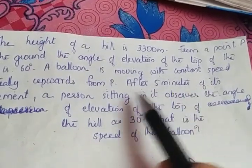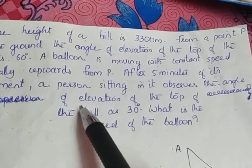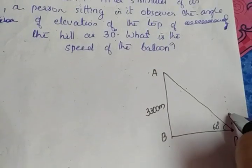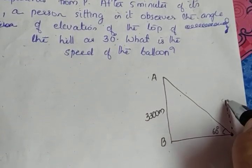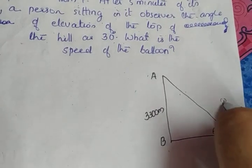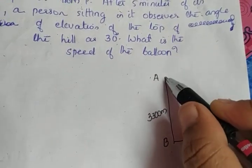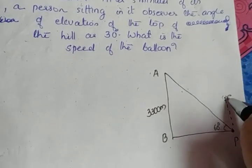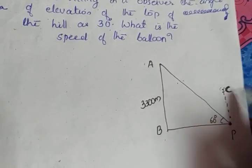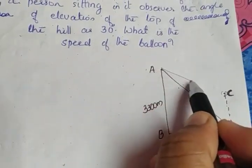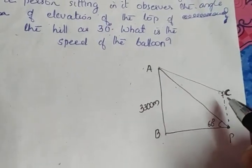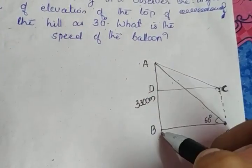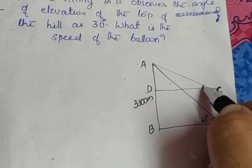After 5 minutes of its movement, a person sitting in the balloon observes the angle of elevation of the top of the hill as 30 degrees. Suppose the balloon reaches point C after 5 minutes. The line of sight will be AC, and the horizontal line CD is drawn perpendicular to AB. The angle ACD is given as 30 degrees.